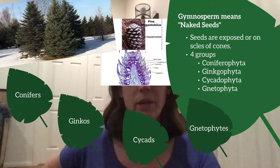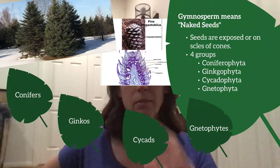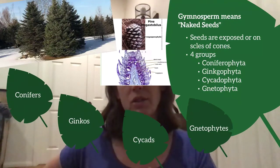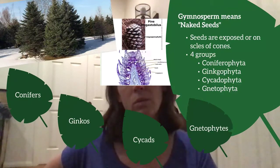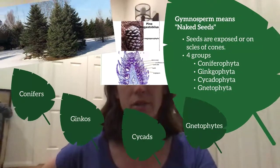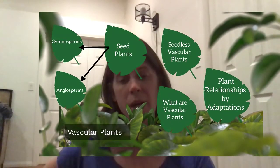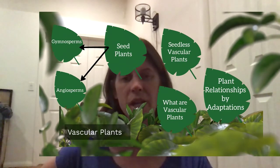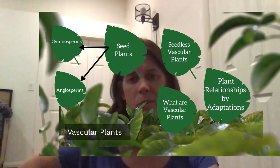That pretty much covers the gymnosperms. Make sure you understand the characteristics of gymnosperms overall and the characteristics of each of these four groups, but you only really need to understand the cones and the alternation of generations for the conifers. The next video will be part three of the vascular plants, where we'll go over the angiosperms.